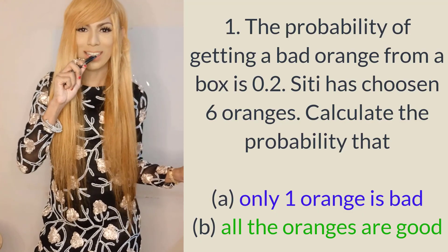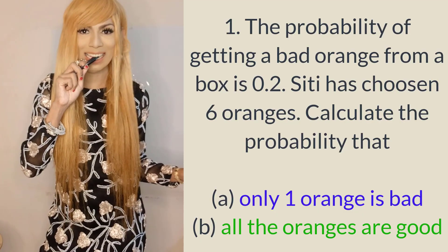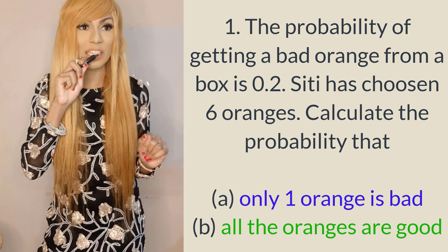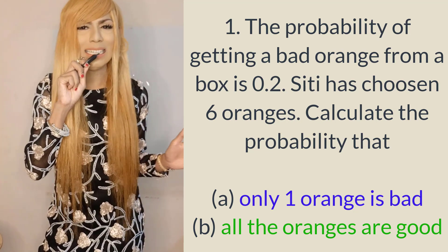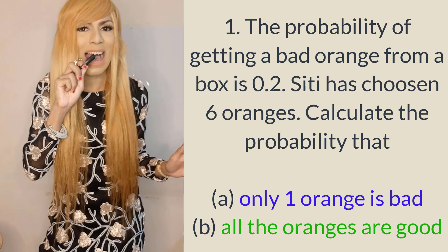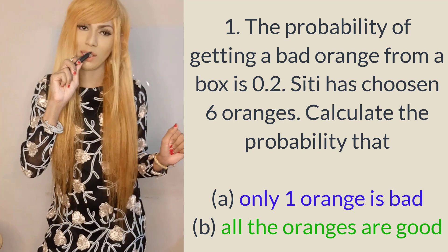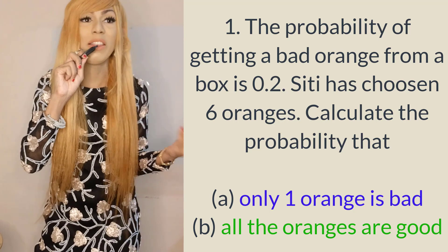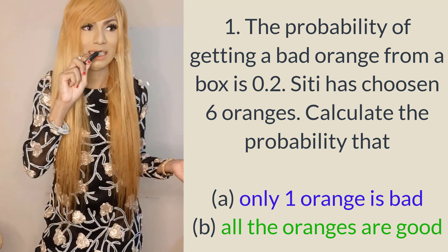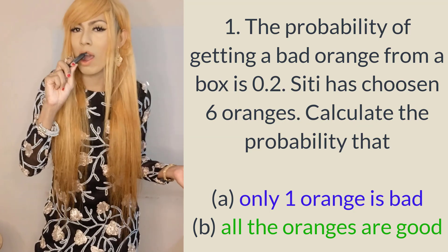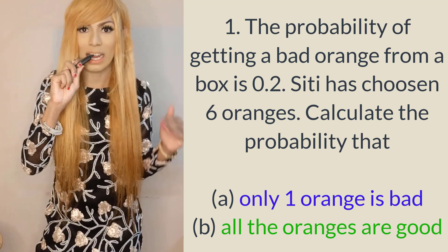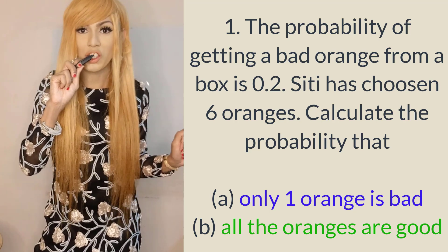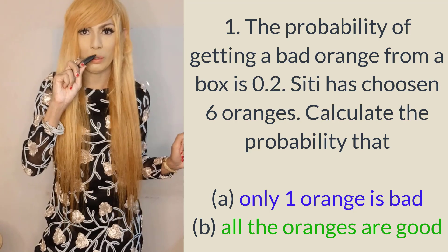Question number one: the probability of getting a bad orange is 0.2. CT has six oranges. Calculate the probability that only one orange is bad, and for the second part of the question, that all the oranges are good.